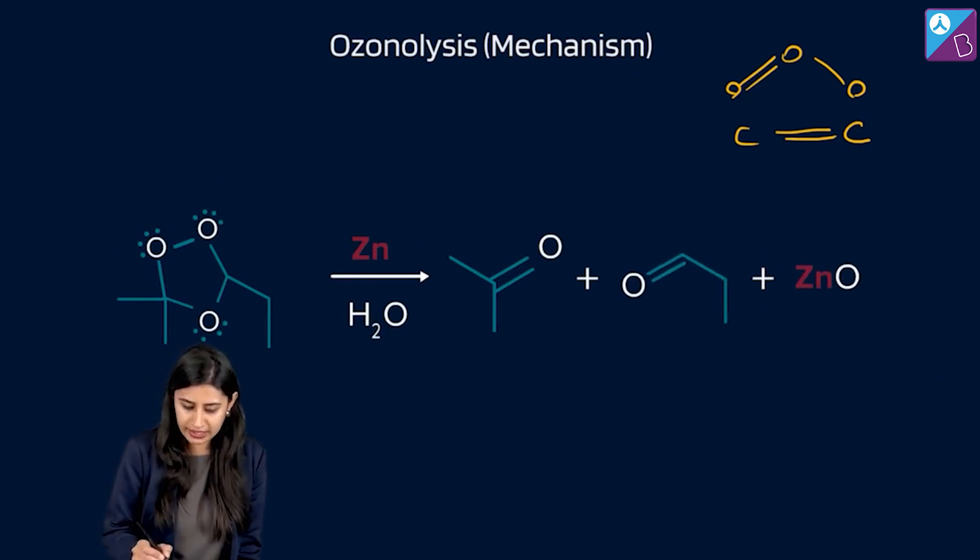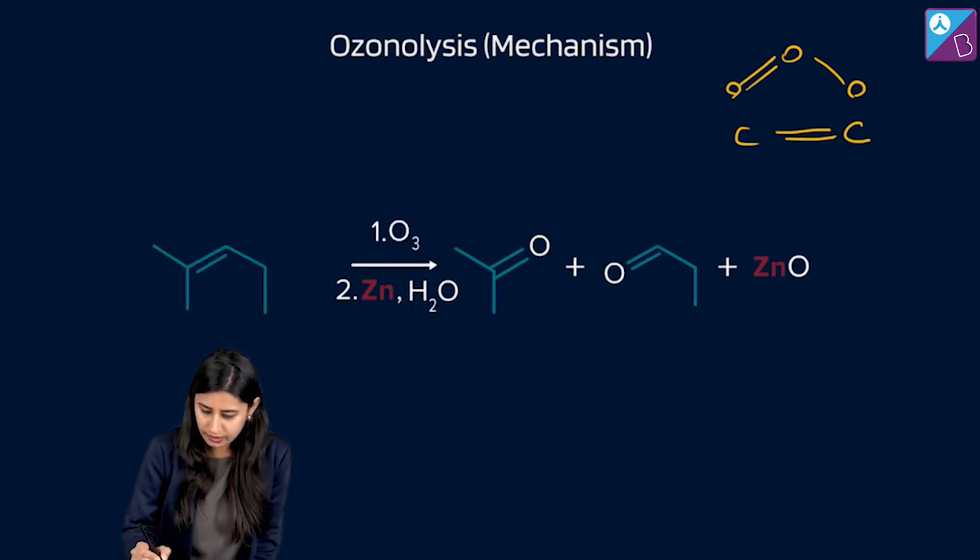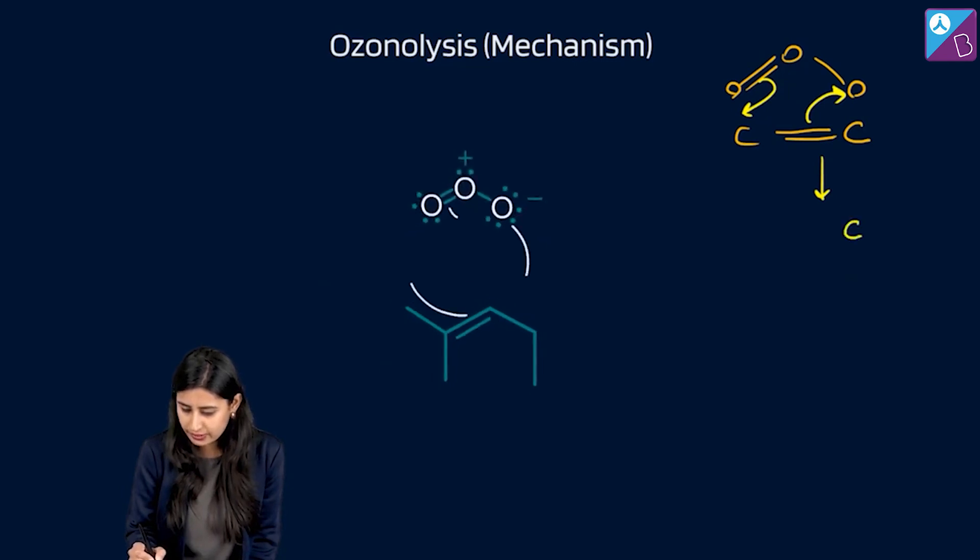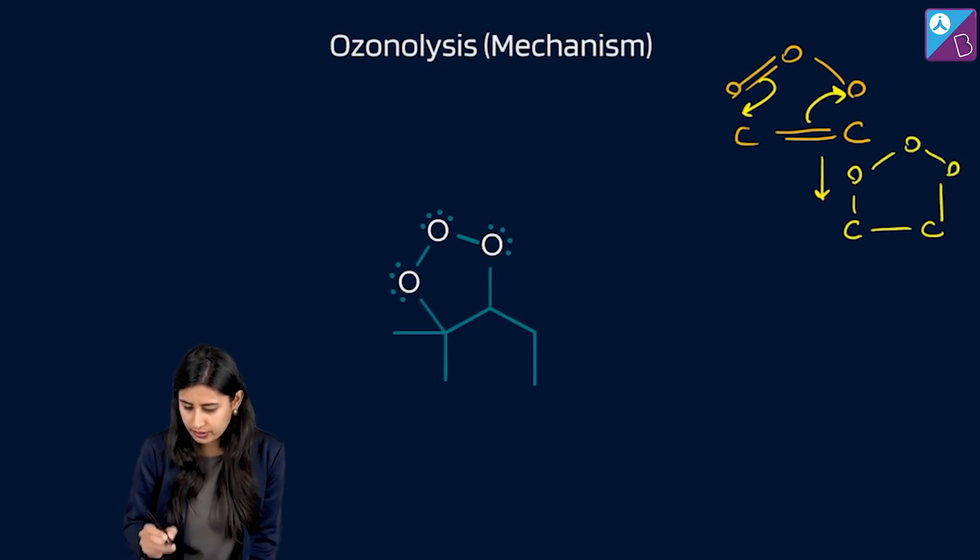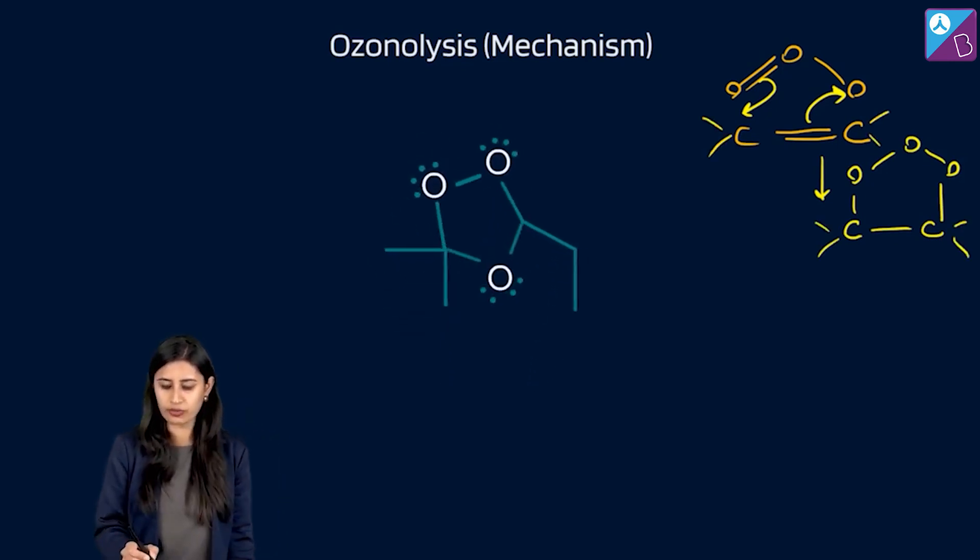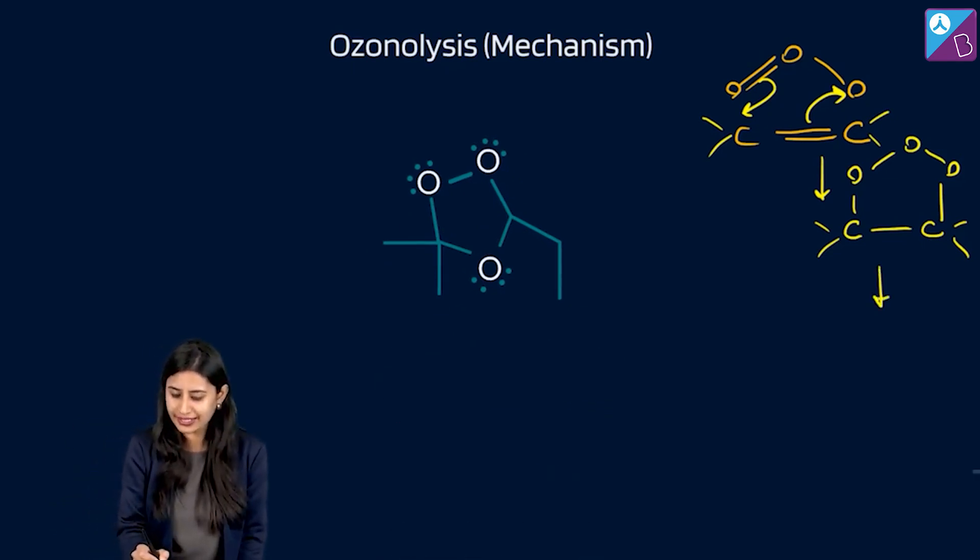This is coming here and this is coming here so that you get a temple kind of a compound like this. Right? And whatever is out here retains. So this is what we get which on further rearrangement gives us ozonide.